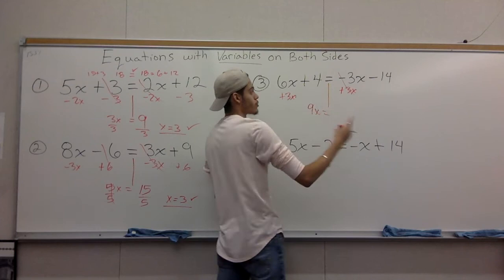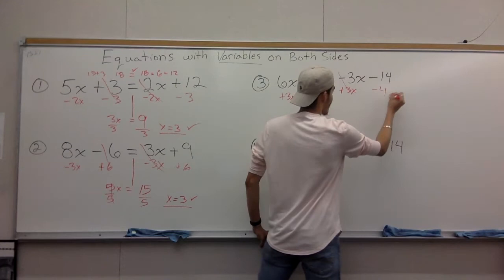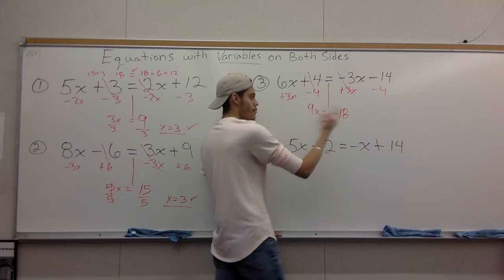We have this plus 4 right here, we subtract because we do the opposite. Cross it off, we don't need it. Subtract 4 to the other side, negative 14 minus 4 gives you negative 18.